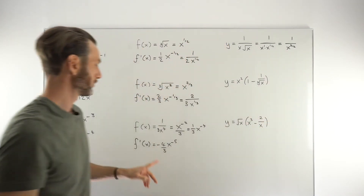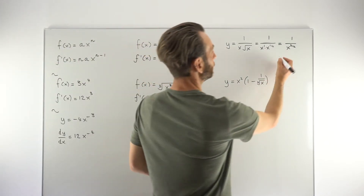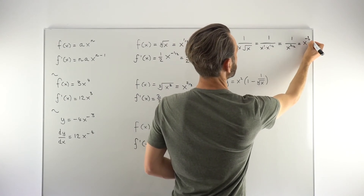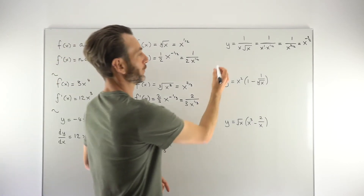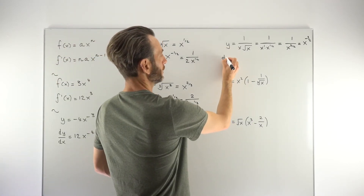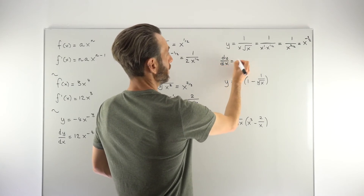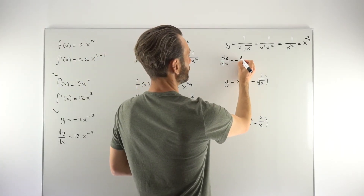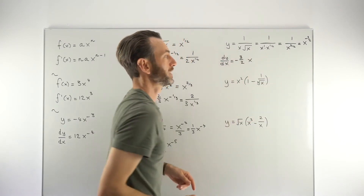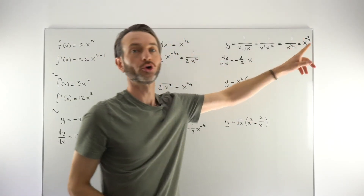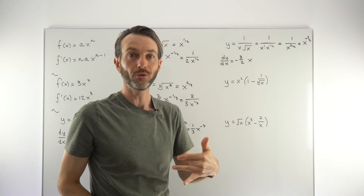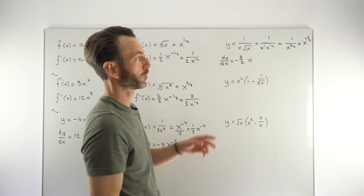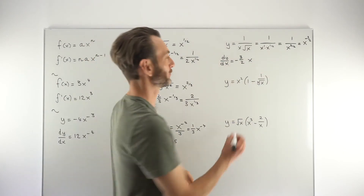It's still not quite in a differentiable form even after two exponent rules. But we know how to deal with this — bring that term up to the top, so it becomes X to the power of minus three over two. That is now in a differentiable form. The function was written as Y, so we use DY/DX notation. Multiply by the power: minus three over two. Reduce the power: minus three over two minus two over two equals minus five over two.